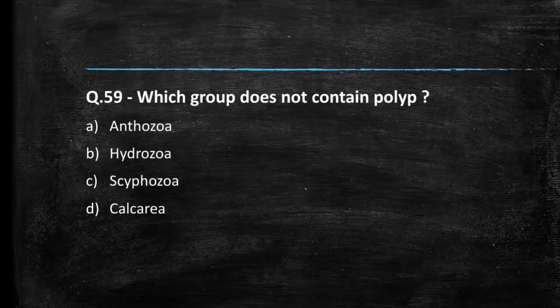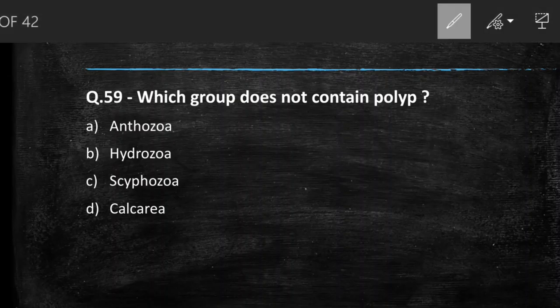Next question: which group does not contain polyp? Options are Anthozoa, Hydrozoa, Scyphozoa, and Calcarea. Anthozoa, Hydrozoa, and Scyphozoa are cnidarians and polyp is present in cnidarians. But Calcarea is a Porifera group, so polyp is absent in Calcarea. The answer is Calcarea.